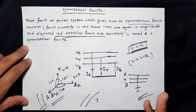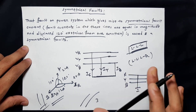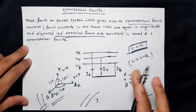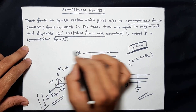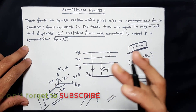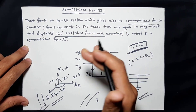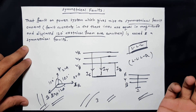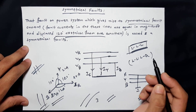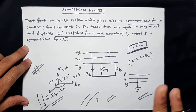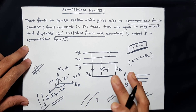We can see that in a power station and distribution center, the faults that occur are mostly asymmetrical faults. The majority of faults are asymmetrical faults — symmetrical faults are very rare. So in the next video, we will see asymmetrical faults, and also percentage reactance, short circuit kVA, and short circuit current — using these concepts to solve problems.